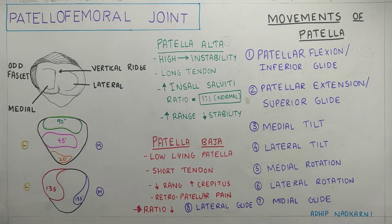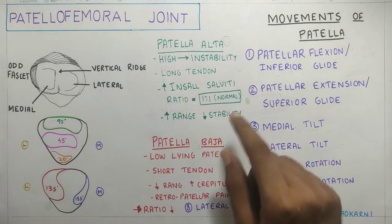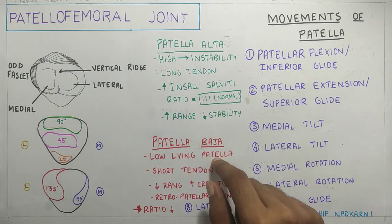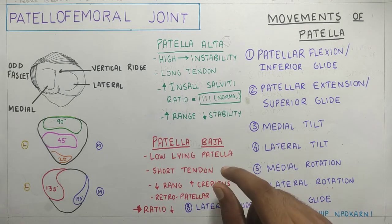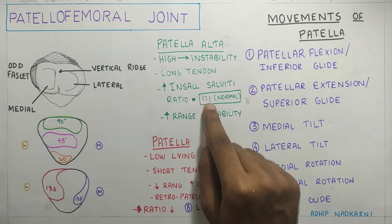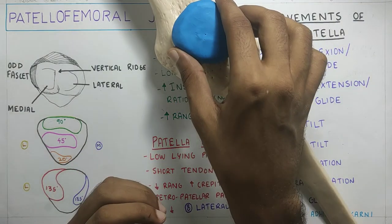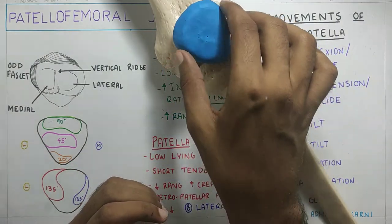Now that we know the movements, let us see what is patella alta and patella baja — the pathologies related to the patella. There is something called the Insall-Salvati ratio, which is the ratio between the length of the patella and the length of the patellar tendon. The normal value is 1:1.